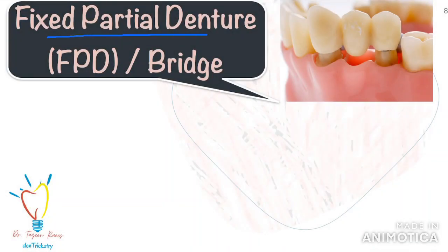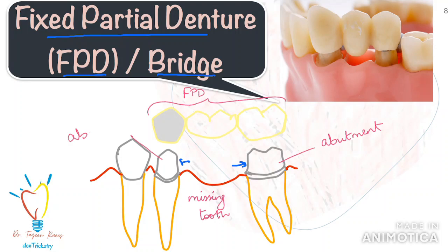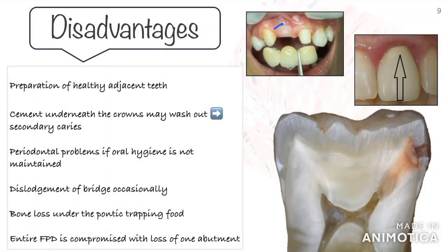The first option is a fixed partial denture, in short FPD, also known as a bridge. In this case, we have to take support from the adjacent healthy teeth. The healthy adjacent supporting teeth, also known as the abutments, are significantly reduced to create enough space for the retainer which is connected to the pontic. The pontic is the part replacing the missing tooth. However, the major issue with FPD is that we have to grind down the healthy adjacent teeth to make space for the crowns on them.